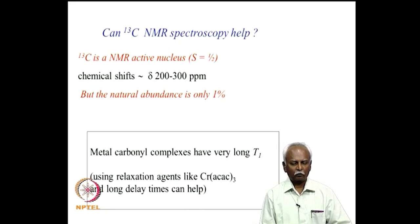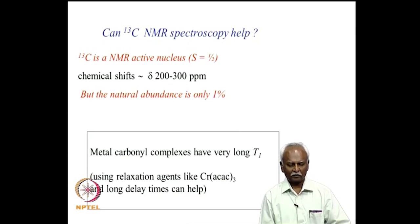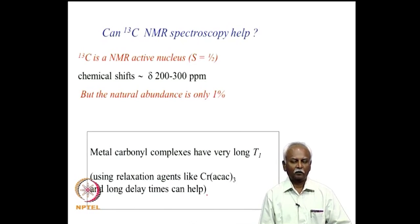Carbon monoxide complexes can also be studied using carbon-13 NMR spectroscopy. The difficulty is that the natural abundance of ¹³C is only about 1%, and since carbon is not a very sensitive nucleus, signals for the carbonyl carbon tend to be weak. To address this, external relaxation agents are added to the sample so that relaxation is fairly fast and reasonable signals for the carbonyl carbon can be obtained.